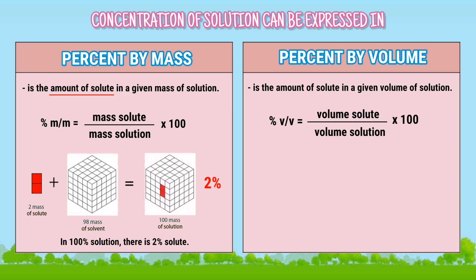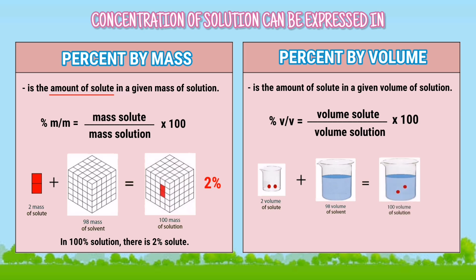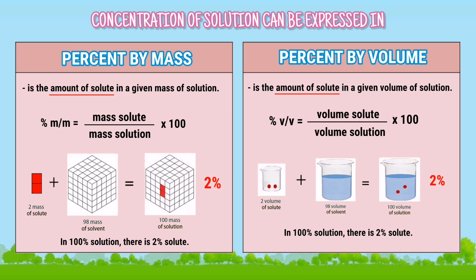The same is true with percent by volume. Two volume of solute plus ninety-eight volume of solvent equals one hundred volume of solution. The amount of solute in this example is two in a total of one hundred volume of solution. Therefore, the concentration of the solution is two percent. Thus, in every one hundred volume of solution, there is two volumes of solute, or in one hundred percent liquid solution, there is two percent solute.